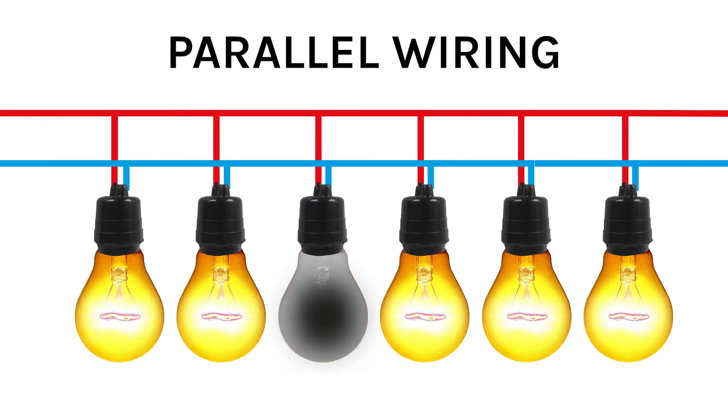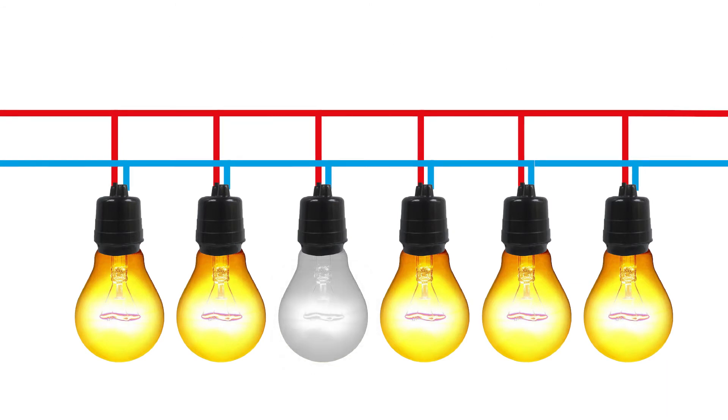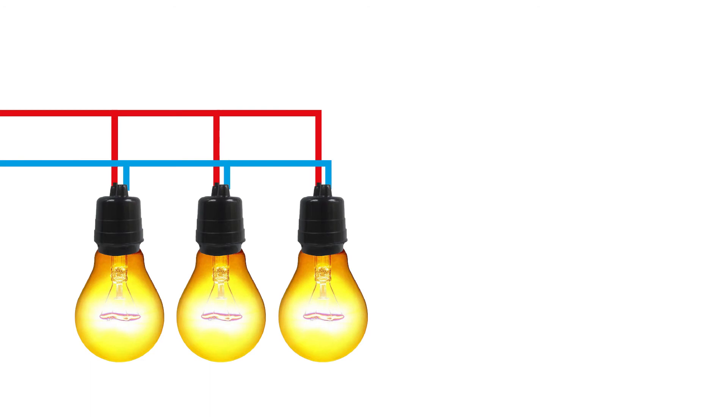If one bulb blows in a parallel wiring scheme, it doesn't affect the bulbs before it or after it. It's just that bulb goes out and that's it. More importantly for what we're talking about, if you wire everything just right, you can even take some of the bulbs out of the equation and the other stuff still works. This takes even more engineering, but it's obviously incredibly valuable for something like a bias light that you want to cut to size.